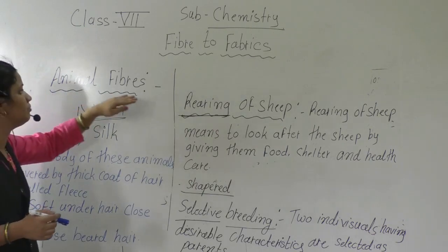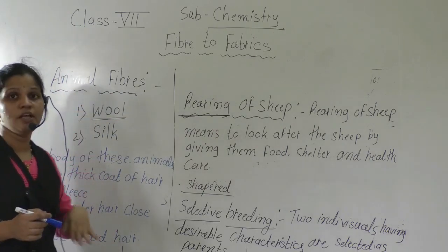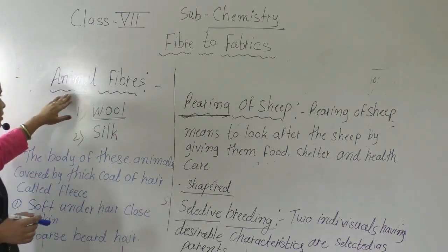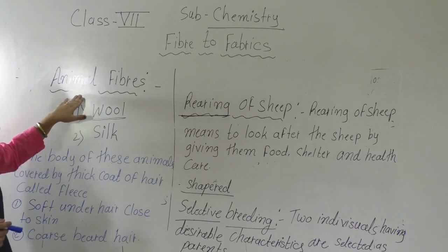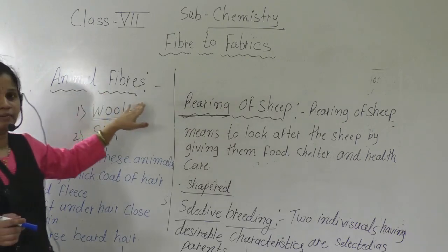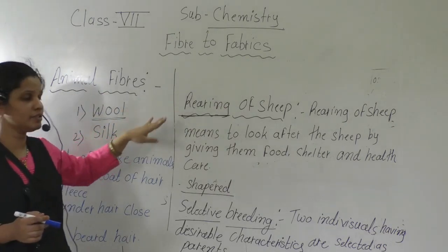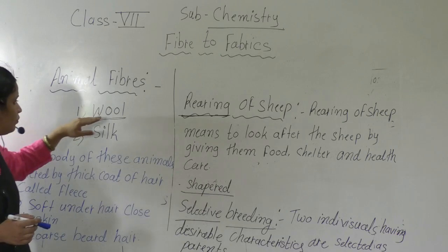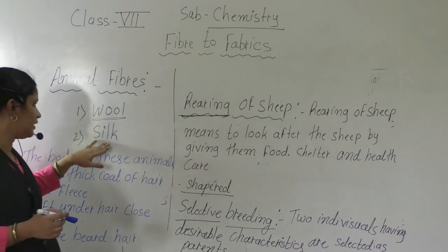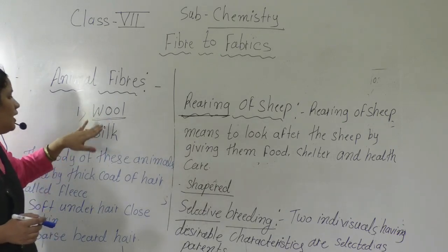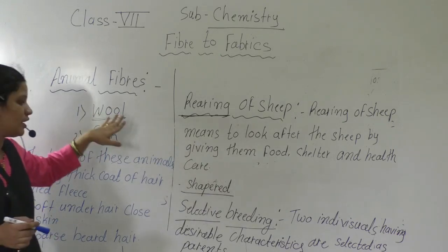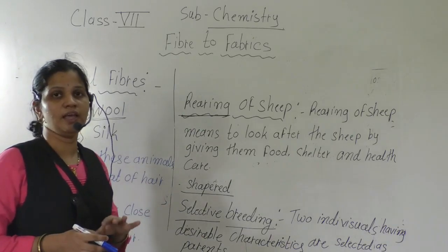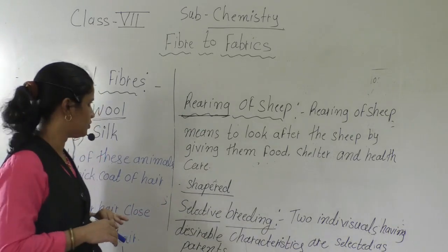Now, what are animal fibers? Fibers which we get from animals are known as animal fibers. For example, wool and silk. Wool and silk we are getting from animals, so they are known as animal fibers.